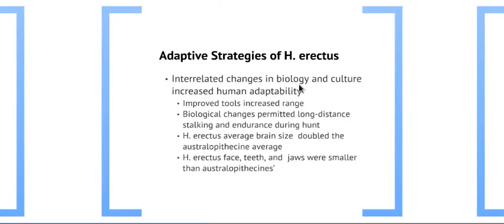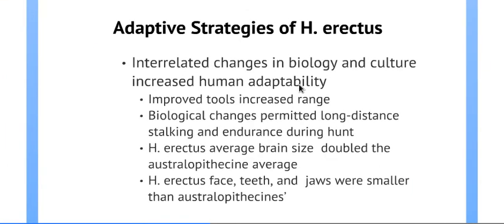What's important about Homo erectus is that it's the first one really roaming around the planet, fully bipedal and not depending on forest or jungle. They transitioned completely and were biologically endowed for terrestrial life in bipedal mode. There's an improvement in their tools, and those biological changes show that they could actually do long-distance stalking and hunting — something documented in a very interesting way.